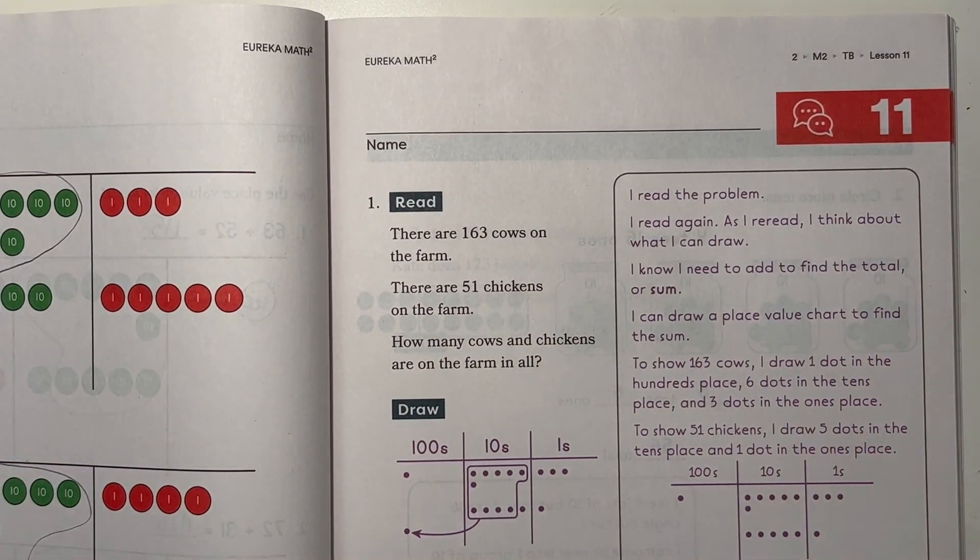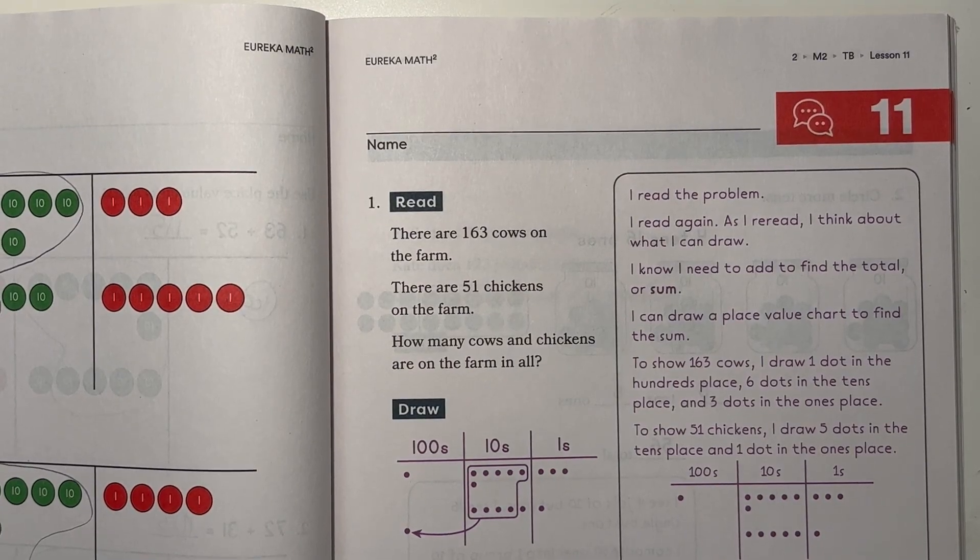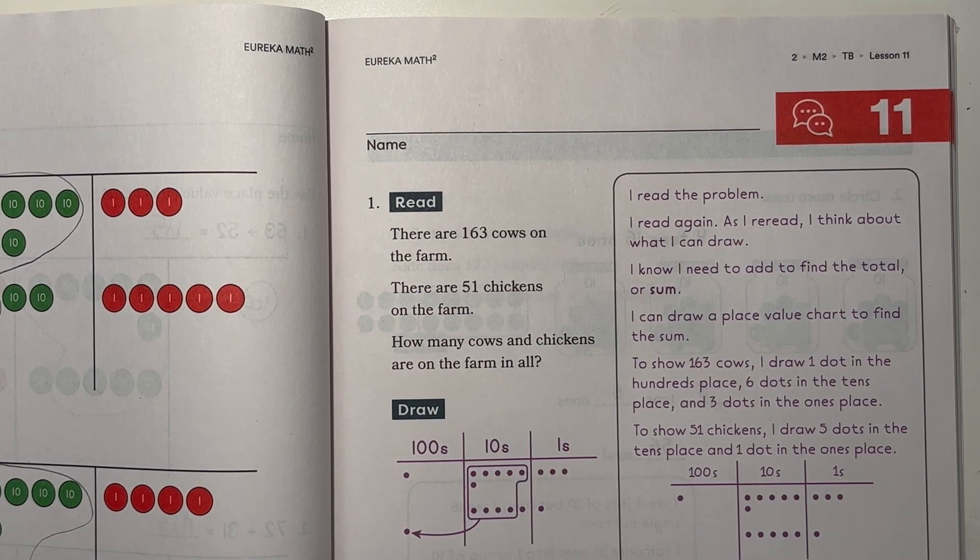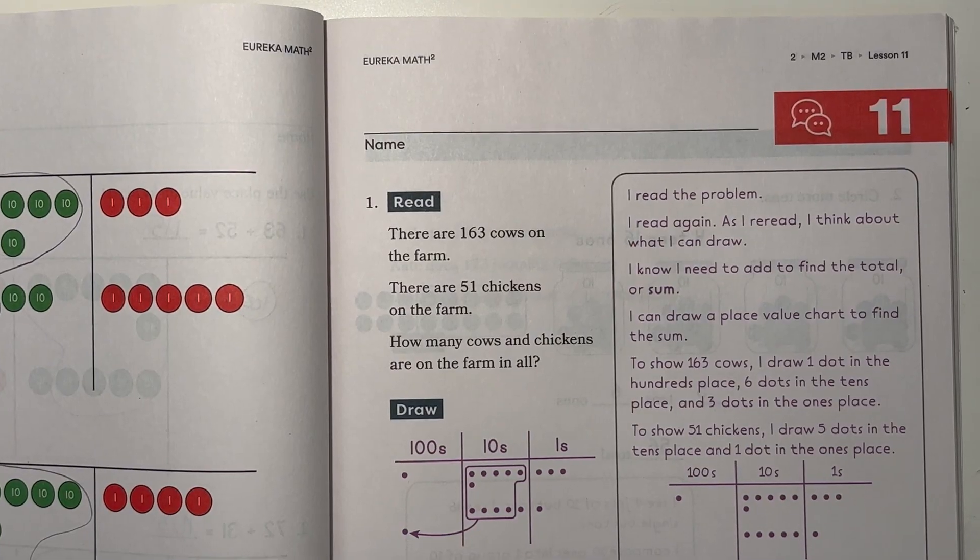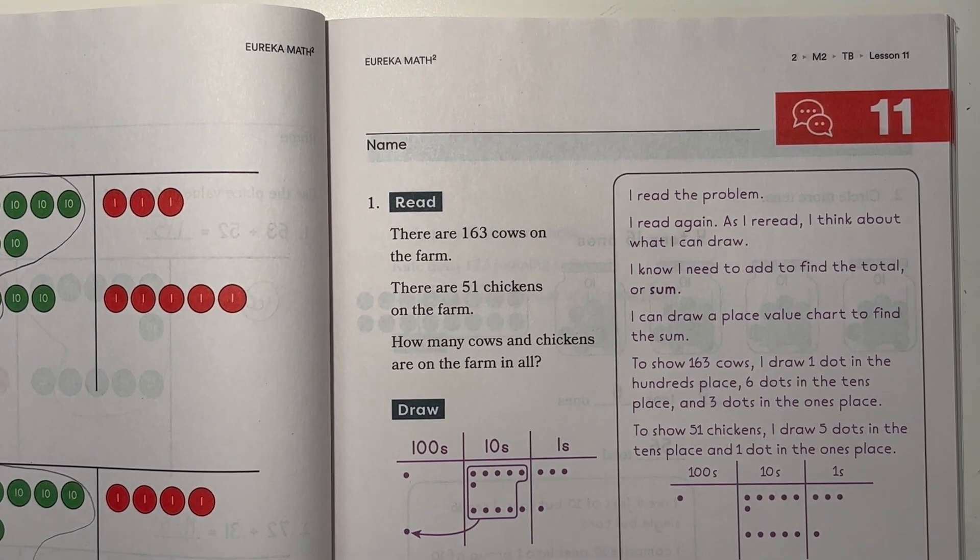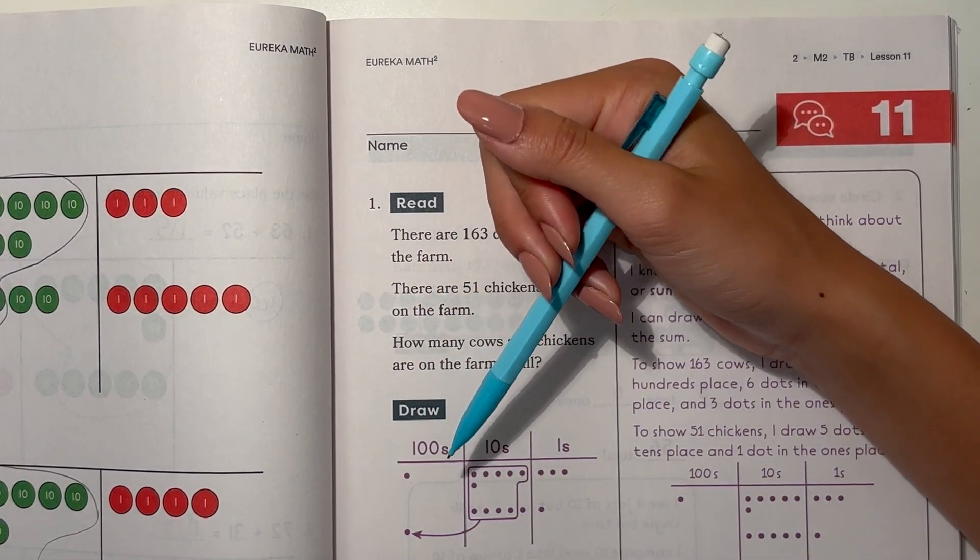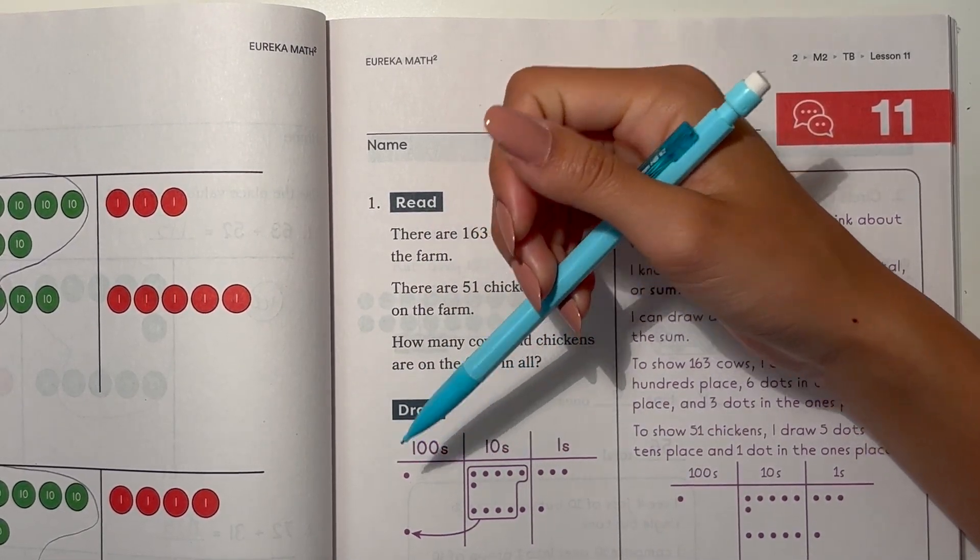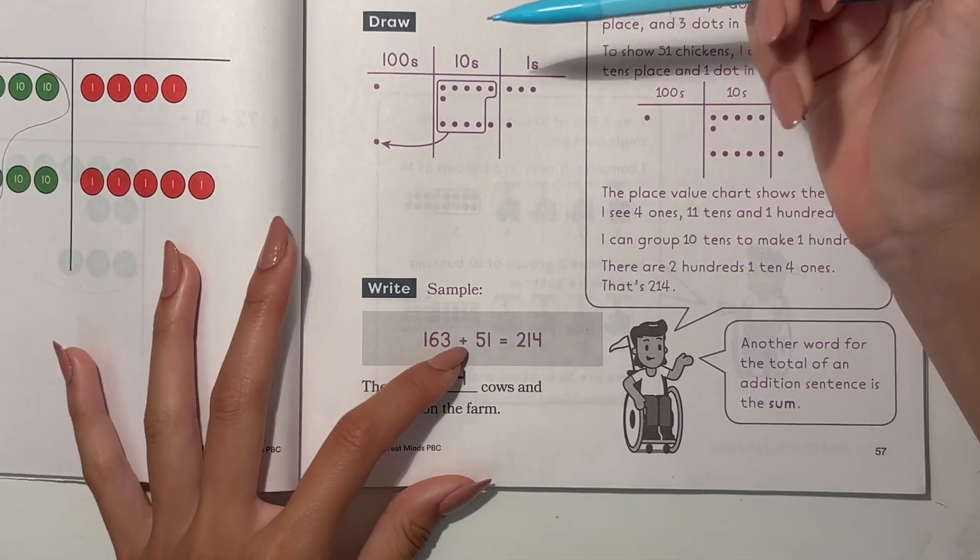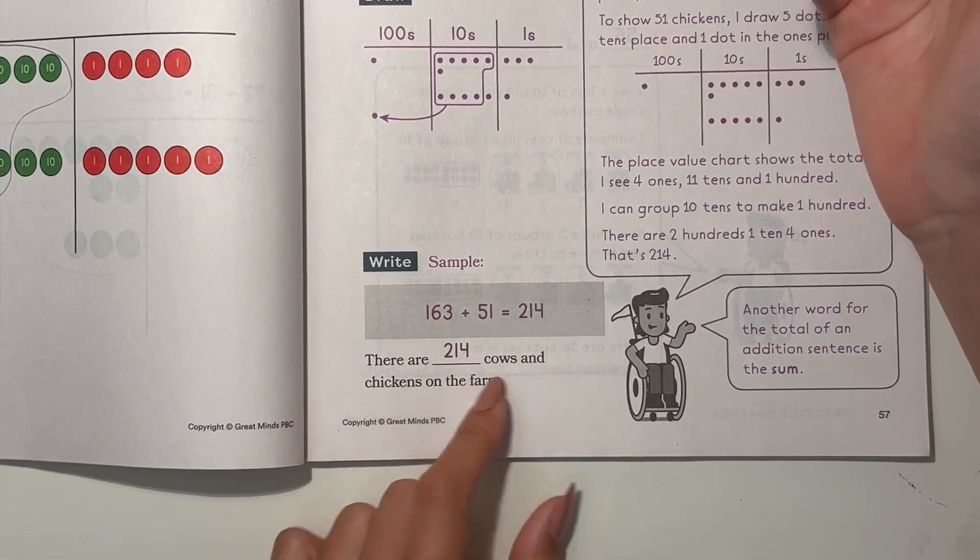Number 1. There are 163 cows on the farm. There are 51 chickens on the farm. How many cows and chickens are on the farm in all? So let's add. Draw a place value chart. Add it. Regroup. 163 plus 51 is 214. So that's our answer.